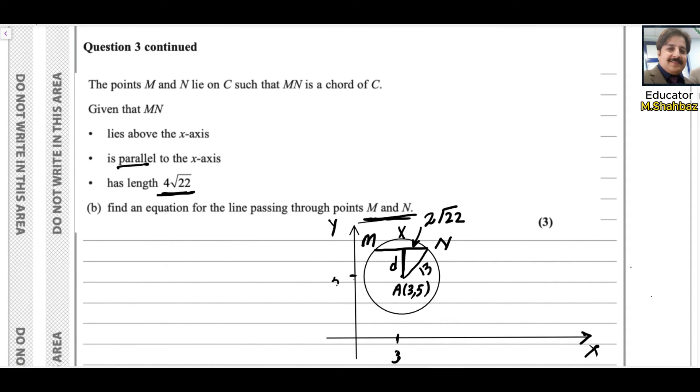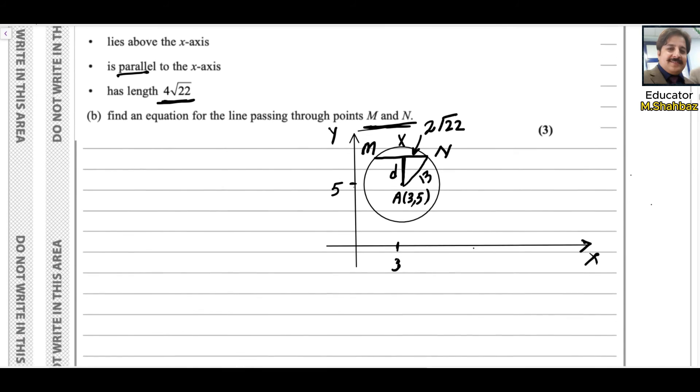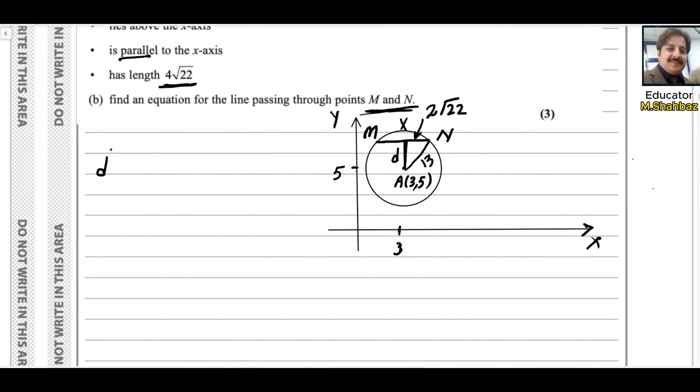This one we already know is 5. If we are able to find d, we will add it and we will find from where it is passing through. We need to find d by using Pythagorean theorem.